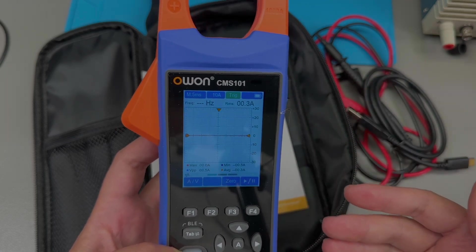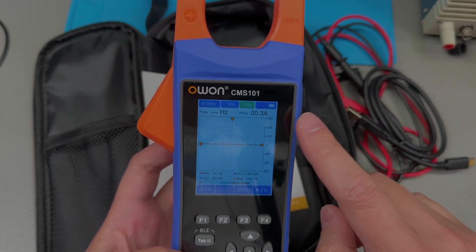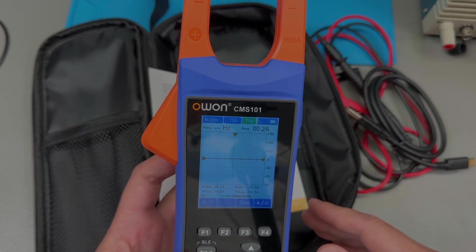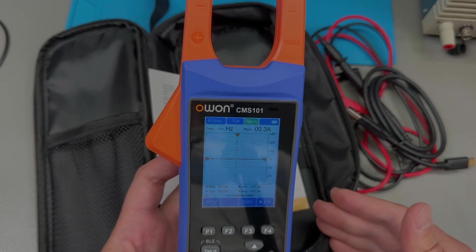it can certainly be a good selling point for the average hobbyist or handyman where he would be getting more for the money. Personally, I do see some value into having an oscilloscope type functionality in a clamp meter for viewing the current and voltage waveform, as that can certainly help with debug.